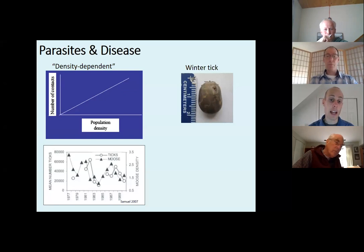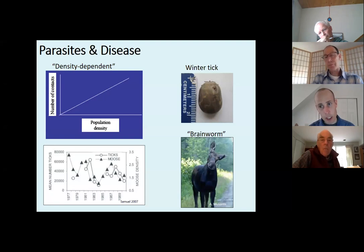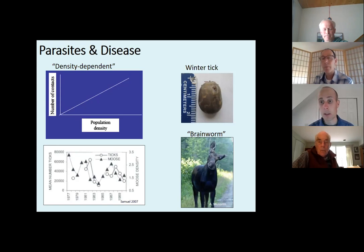It generally lags moose abundance, but moose abundance goes up, winter tick abundance generally goes up as well. The other major parasite influencing moose in New Hampshire is brain worm — more accurately, meningeal worm. Interestingly, the natural or primary host of meningeal worm is the white-tailed deer. Moose are actually an accidental host and it causes clinical symptoms in them. It's less of a density-dependent relationship on moose, more of a density-dependent relationship of deer.